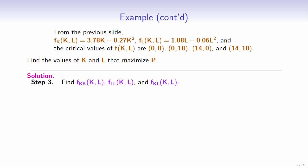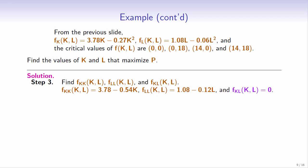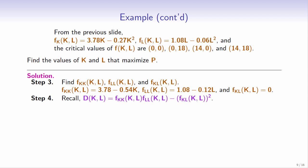Step 3: Find the second order partial derivatives of f. fkk equals 3.78 minus 0.54k. fll equals 1.08 minus 0.12l. fkl equals 0. Step 4: Recall that d equals fkk times fll minus fkl squared.